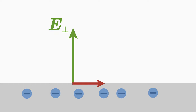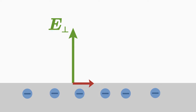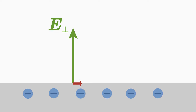The electrons continue to move along the surface until an equilibrium is reached. In this equilibrium, the parallel force due to the mutual repulsion of the electrons is cancelled out, and thus the electric field pointing parallel to the surface also disappears. If the parallel field component were still present, the electrons would continue to move along the surface. The electric field perpendicular to the surface, however, is still there.